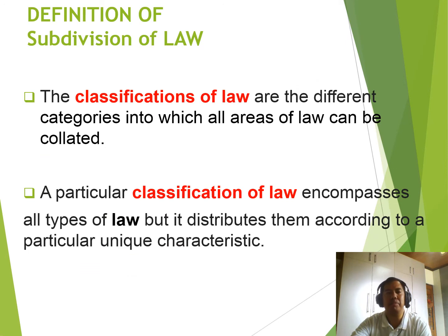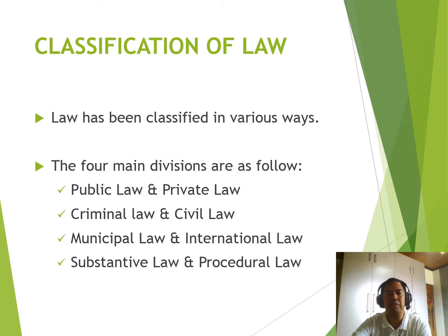The classification of law refers to the different categories into which all areas of law can be collated. A particular classification encompasses all types of law, but distributes them according to particular and unique characteristics. Law has been classified in various ways. The forms and divisions include: public law and private law, criminal law and civil law, municipal law (also known as domestic law) and international law, and substantive law and procedural law.